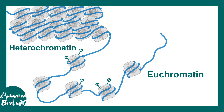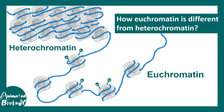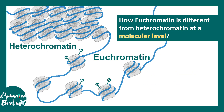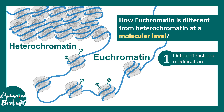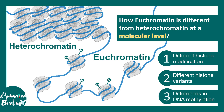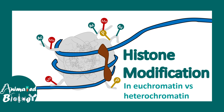Heterochromatin and euchromatin are widely different. From a structural point of view, heterochromatin is densely packed and euchromatin is loosely packed. Heterochromatin is associated with silenced genes, whereas euchromatin is a hub for active transcription. To understand these differences at a molecular level, we need to examine histone modifications, histone variants, and DNA methylation status — all of which dictate chromatin accessibility and gene expression.